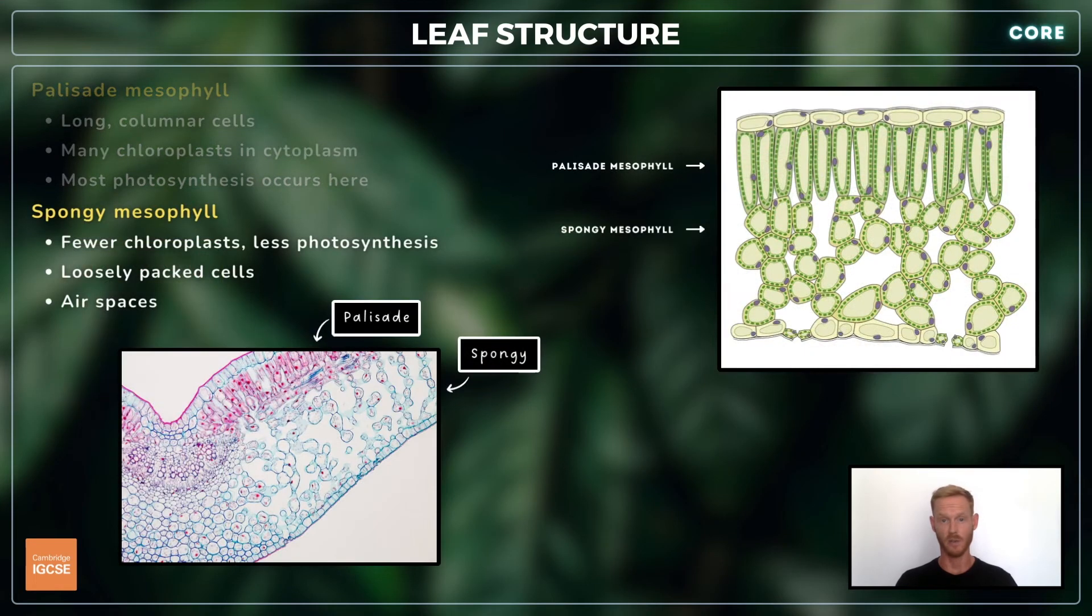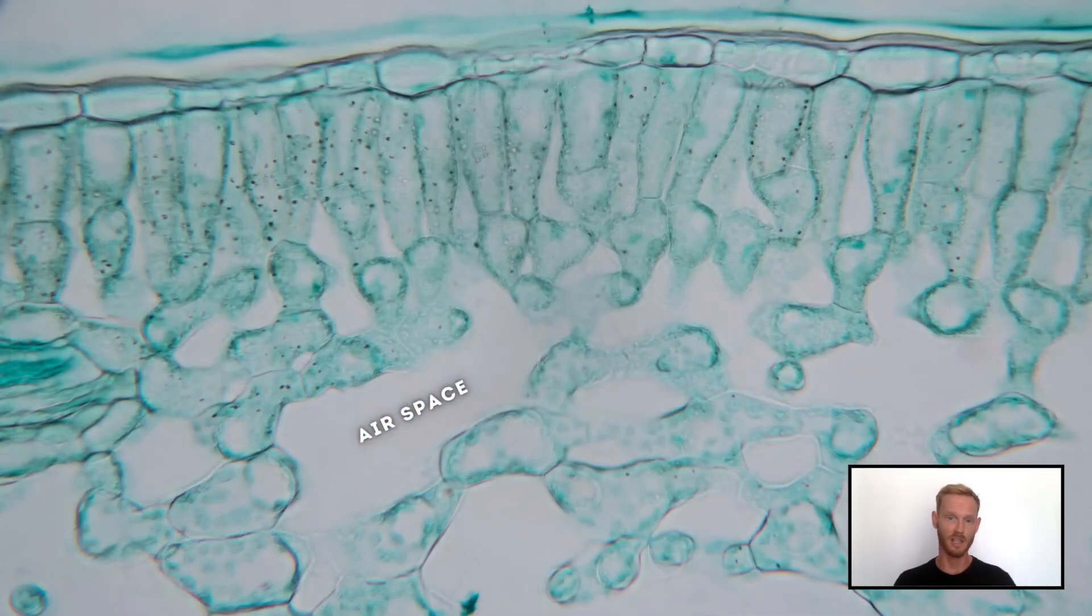The spongy mesophyll cells are located just below the palisade cells. They still photosynthesise, but contain fewer chloroplasts as they receive less light. They're more spherical and fit loosely together, creating airspaces within the tissue that facilitate the exchange of gases.